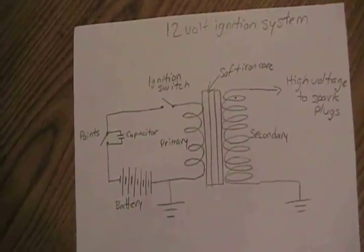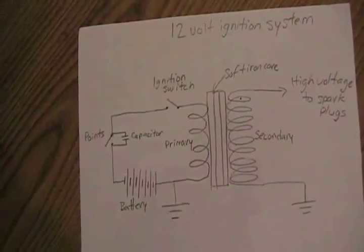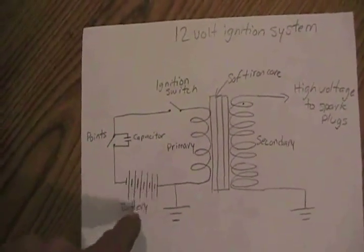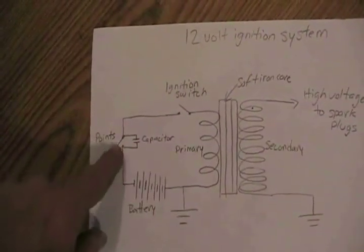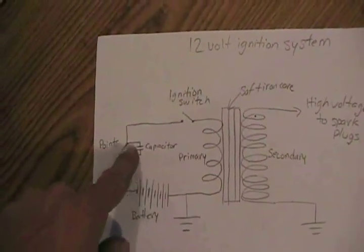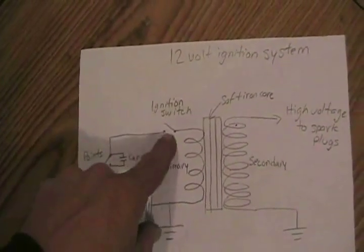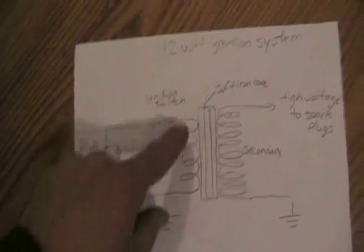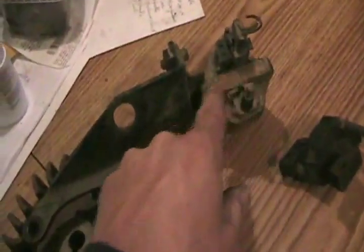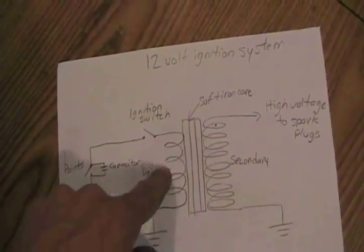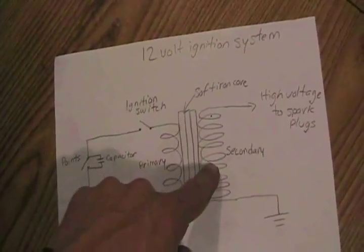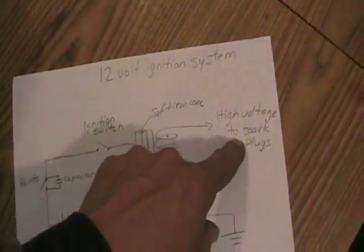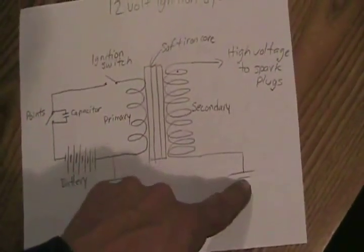So this would be the simplest setup for an ignition system on a vehicle, for example. Battery, probably 12 volts. Points, which is represented by a switch. Capacitor across where the points would be. The ignition switch to shut the whole system off when you shut your key off or it's not in use. Your soft iron core, which would be there, or there, for example. Your primary winding, which has many less turns and thicker wire than the secondary winding, where the high voltage comes out that goes to the spark plugs. This represents ground or earth.